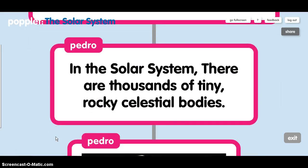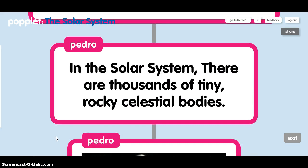Asteroids. In the solar system there are thousands of tiny rocky celestial bodies.